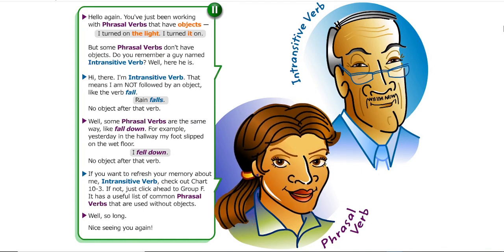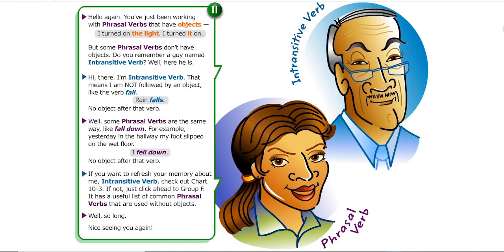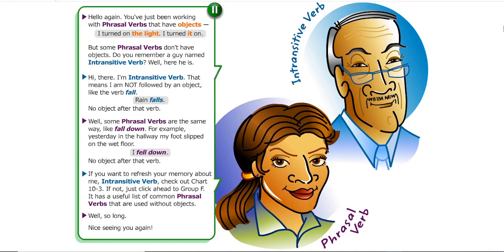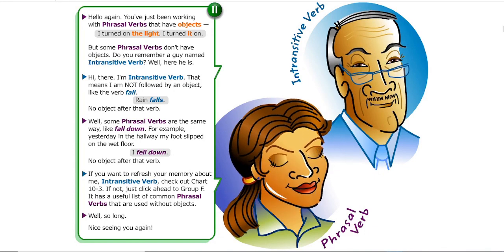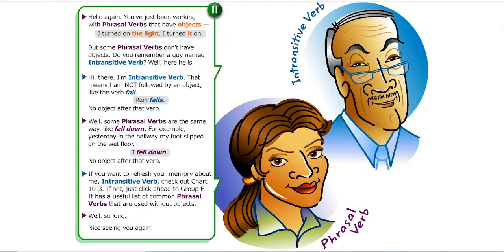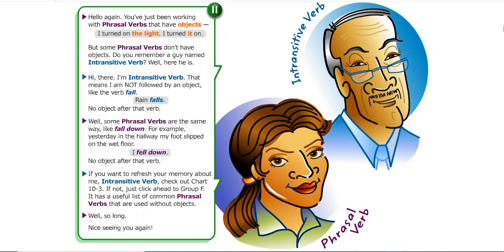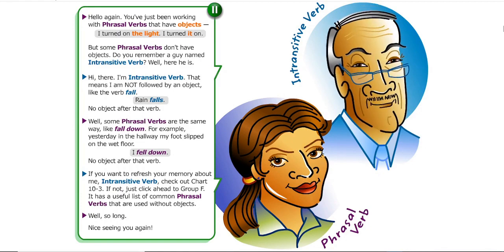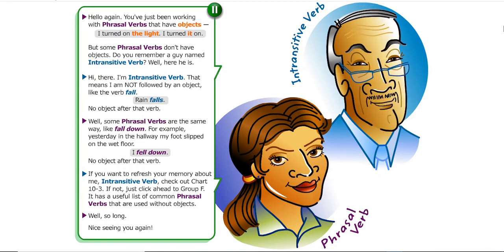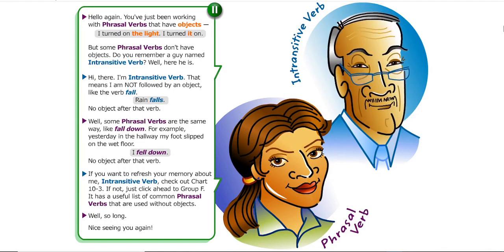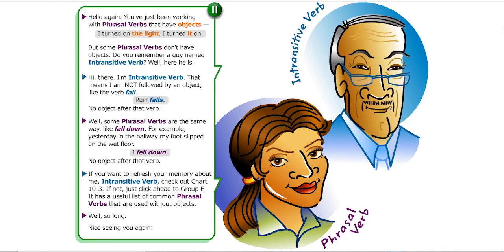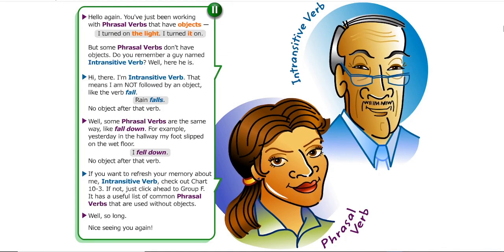Do you remember a guy named Intransitive Verb? Well, here he is. Hi there. I'm Intransitive Verb. That means I am not followed by an object, like the verb 'fall.' Rain falls. No object after that verb.